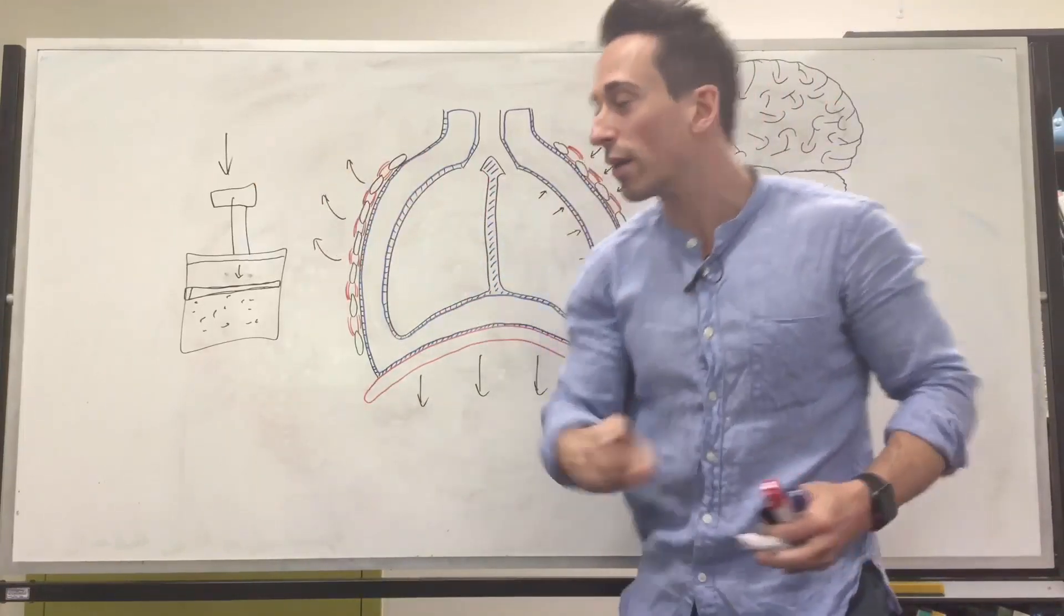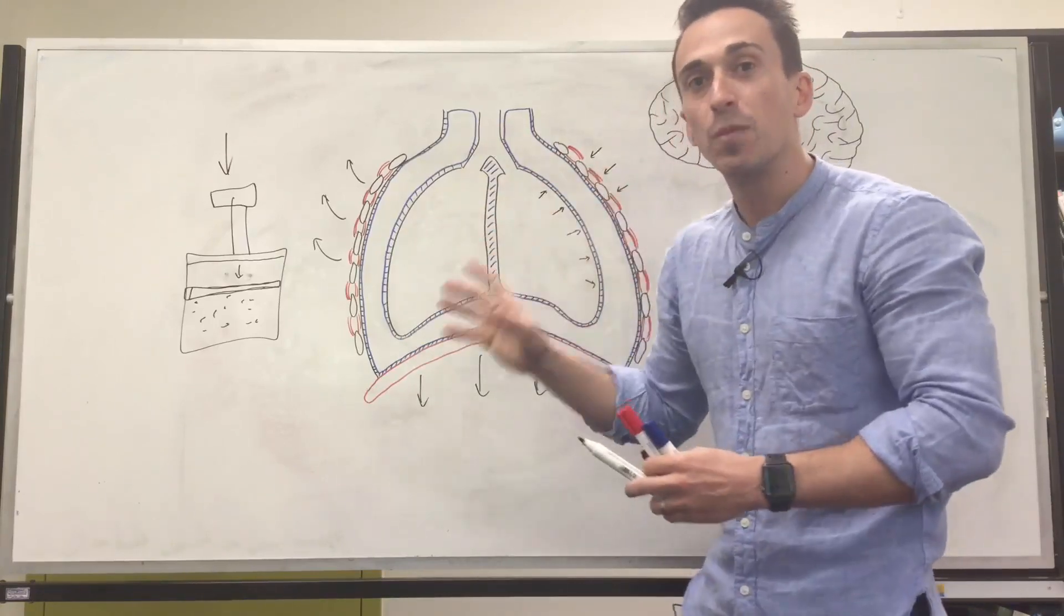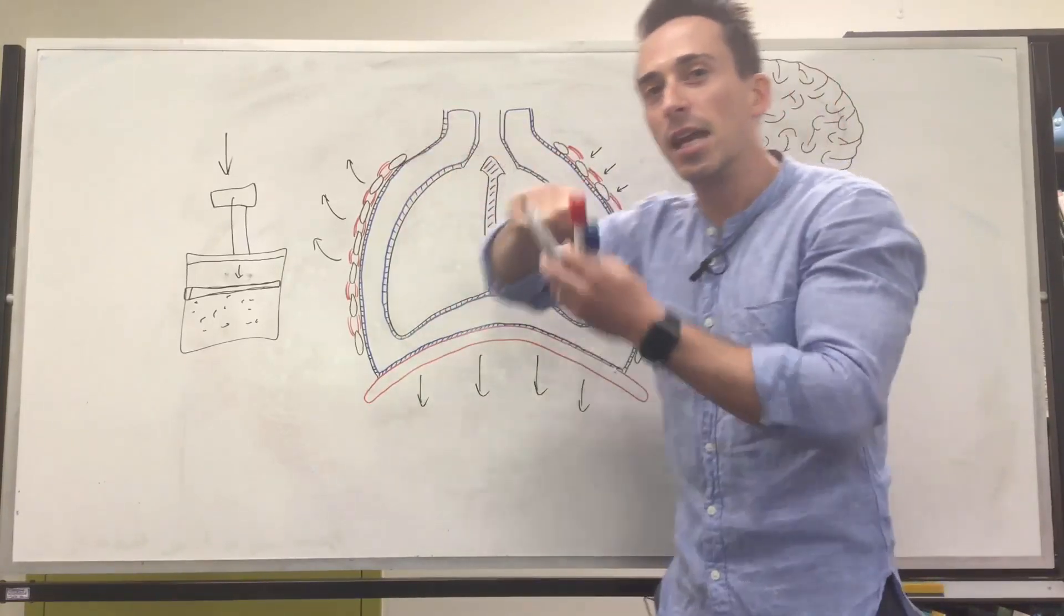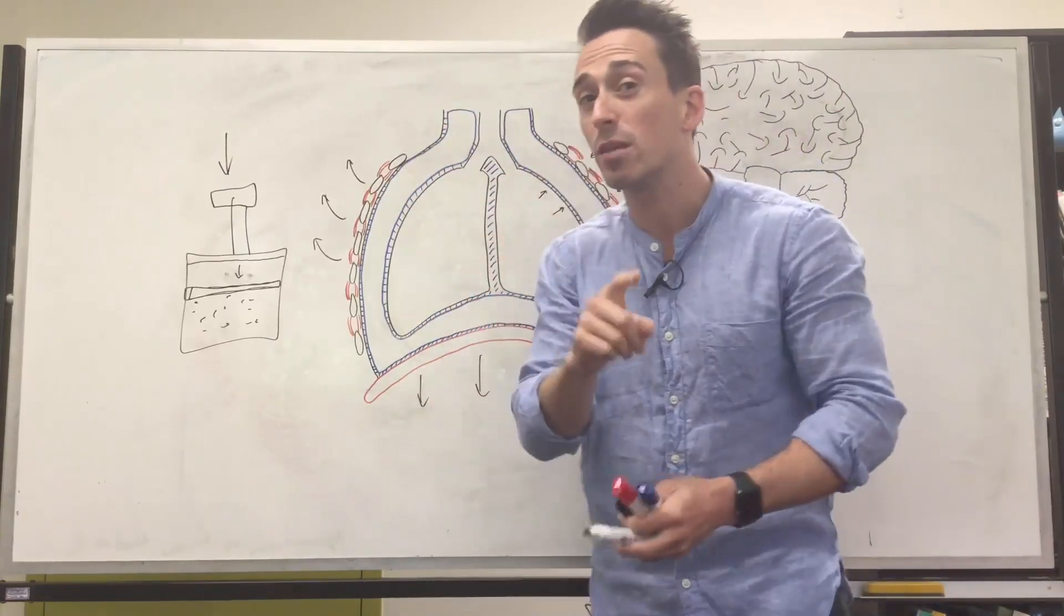So what we're doing effectively is increasing the volume of the lungs, which means we're decreasing the pressure inside. Remember, I said there's that inverse law, Boyle's law, increase the volume, decrease the pressure.